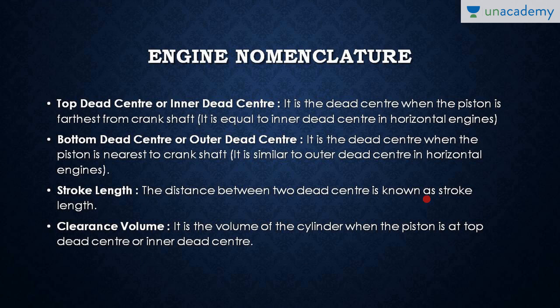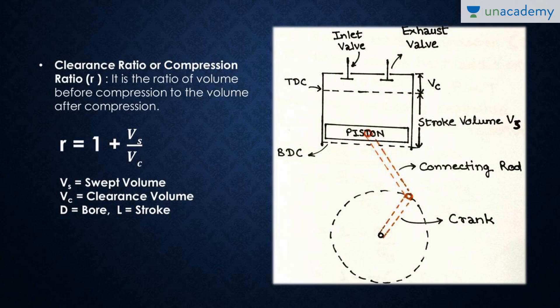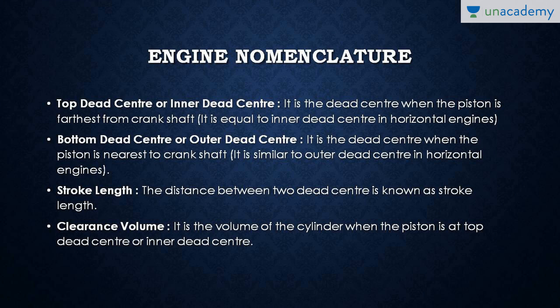The stroke length is the distance between the two dead centers — that is, between the Bottom Dead Center and the Top Dead Center. This is also referred to as swept volume, represented by Vs, while the clearance volume is represented by Vc.